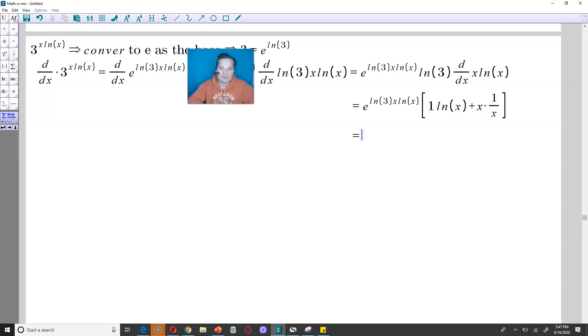In other words, you can take 3 and write it as e to the ln of 3, or equivalently, what you can do is just begin with e raised to the ln of 3 and write it back as 3. It works both ways. It's a beautiful little rule.